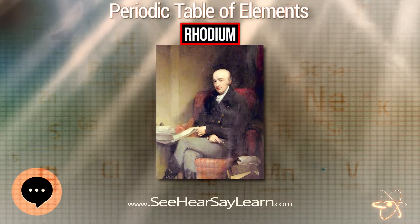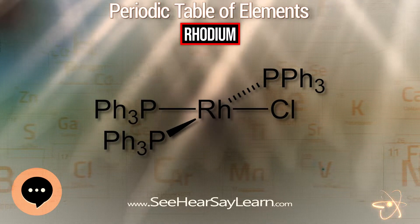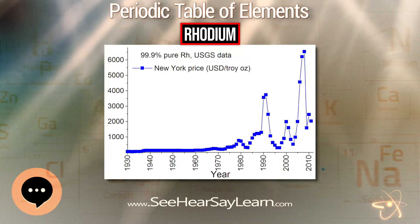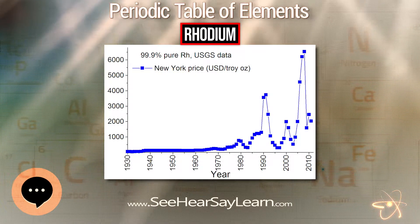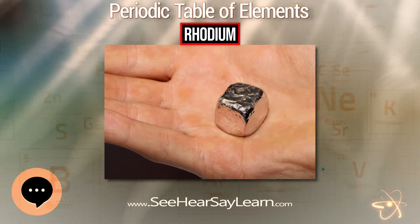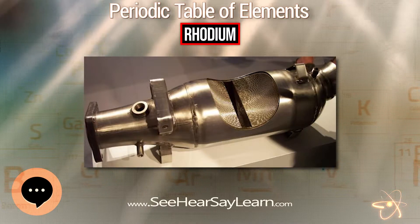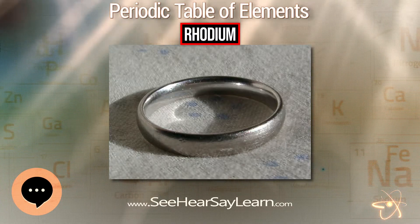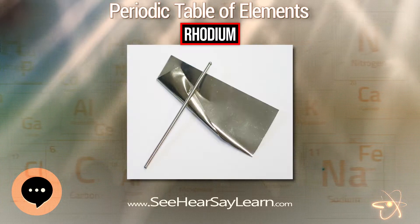Naturally occurring rhodium is composed of only one isotope, 103Rh. The most stable radioisotopes are 101Rh with a half-life of 3.3 years, 102Rh with a half-life of 207 days, 102mRh with a half-life of 2.9 years, and 99Rh with a half-life of 16.1 days.